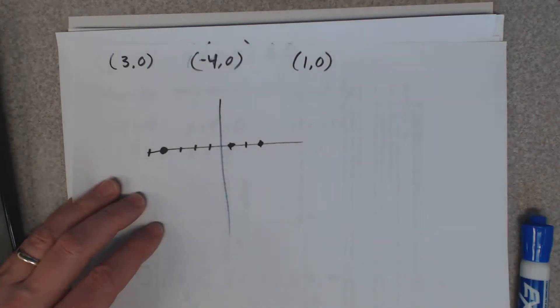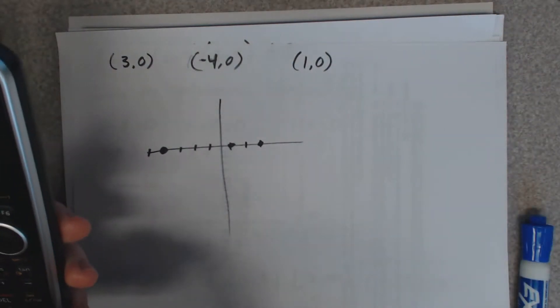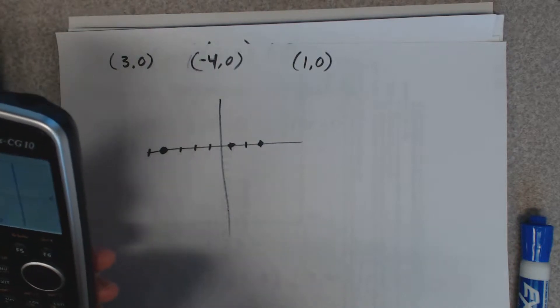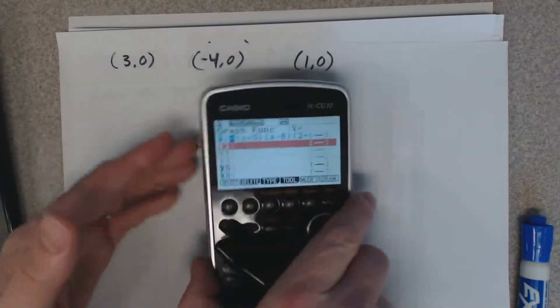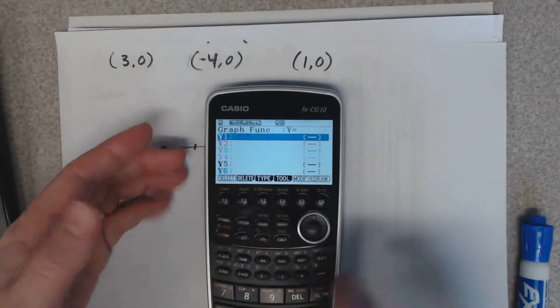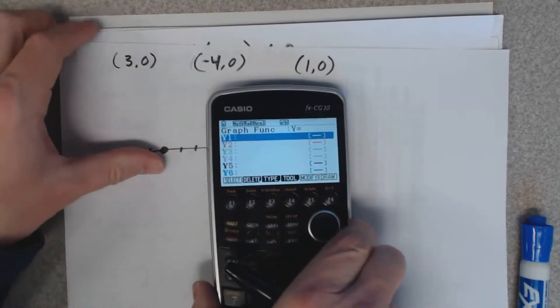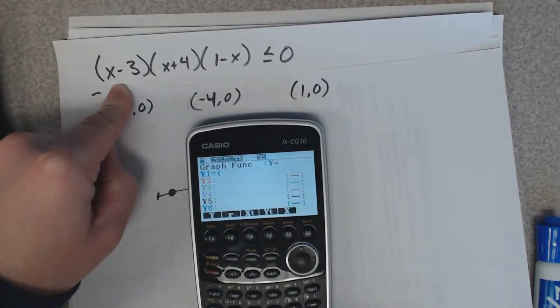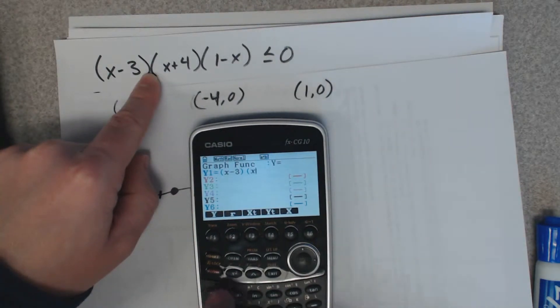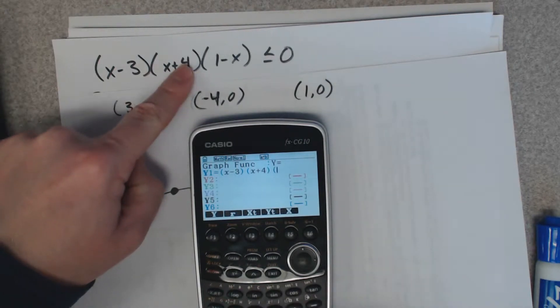Now we just need to figure out how the graph goes through here. If I go to my graphing calculator, I'm going to type this in my graphing calculator. It would be (x minus 3)(x plus 4)(1 minus x).